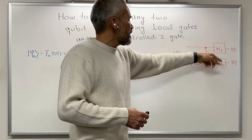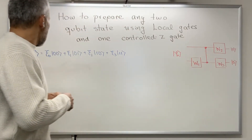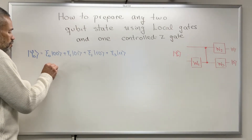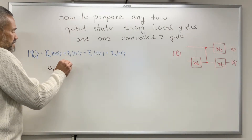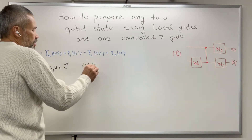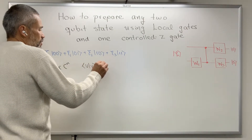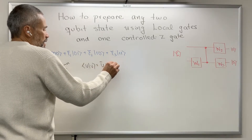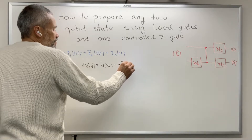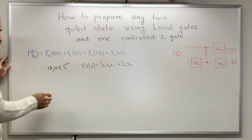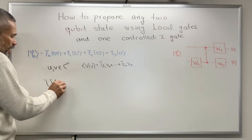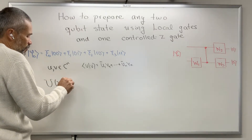Before explaining how to compute W_i, let me introduce the following notation. Remember that if you have two complex vectors in C^n, then the inner product is u_1 conjugate times v_1 plus ... plus u_n conjugate times v_n. Also, let me define a unitary matrix U(x, y).